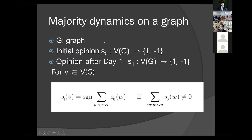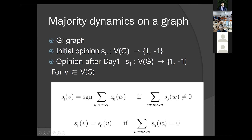The dynamic is defined as follows. Starting from initial opinions of 1 or −1 (red or blue), the opinion after day 1 is S1, determined by this formula: it's just taking the majority of the neighborhood. Formally, it's the sign of the sum of the neighbors' opinions, which is the majority. We define this only if the sum is not 0; if the sum is 0, the opinion remains the same as before — this is the tie-breaking rule.